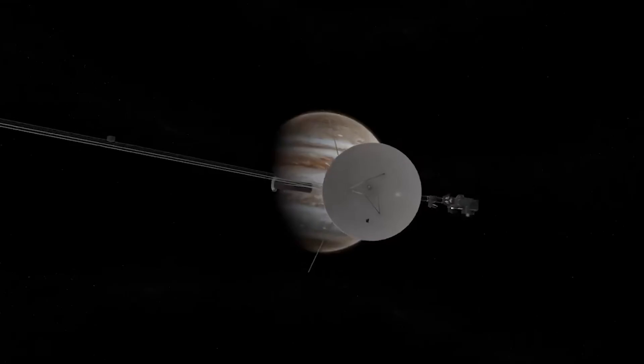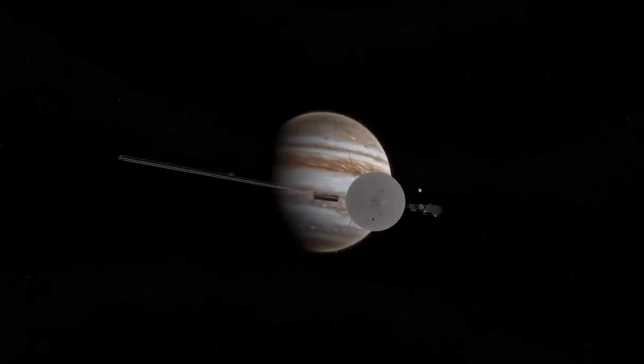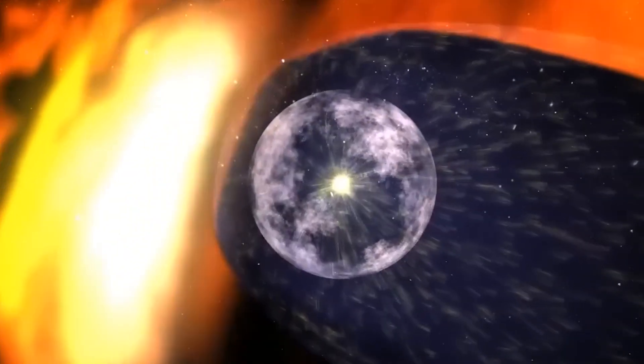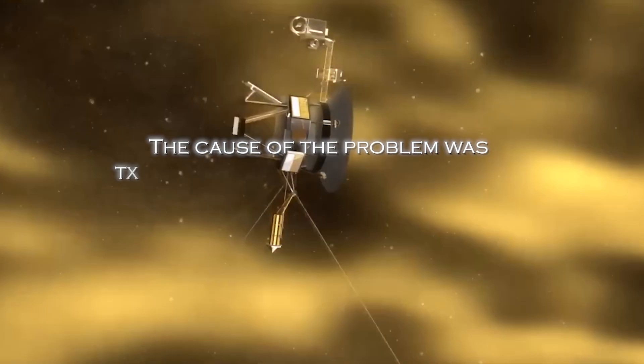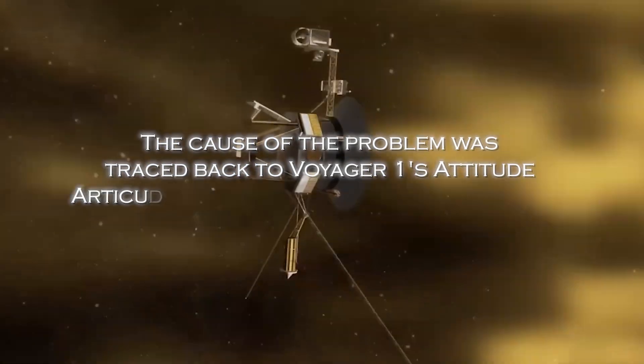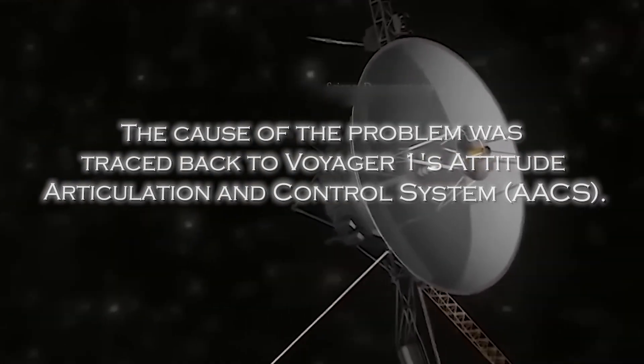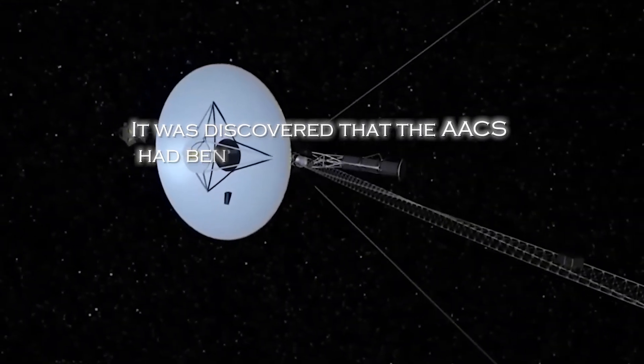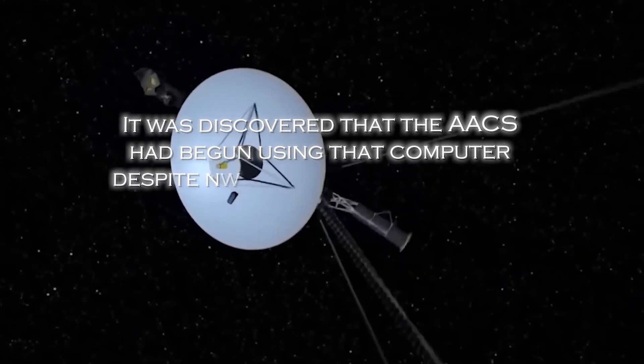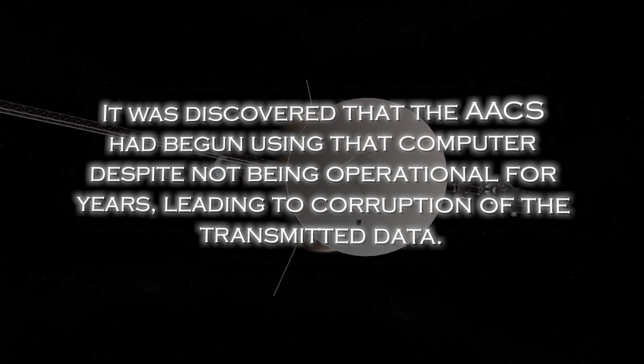After months of receiving encrypted data from the spacecraft, scientists and engineers were finally able to restore clarity and reliability to the information coming from the far reaches of interstellar space. The cause of the problem was traced back to Voyager 1's Attitude Articulation and Control System, or AACS, especially an onboard computer that was supposed to be inactive. Surprisingly, it was discovered that the AACS had begun using the computer despite not being operational for years, leading to corruption of the transmitted data.